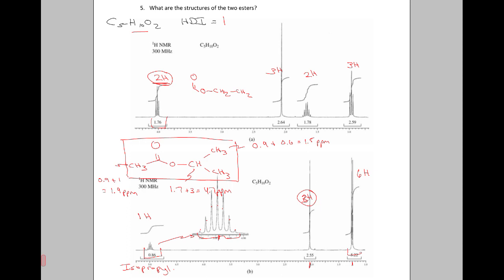We see a singlet here that integrates for three protons, and if we put our methyl group over here, the estimated chemical shift for that methyl group would be 1.9 ppm, just like it was in the last case, and that makes sense because the chemical shift is just over 2, just a little bit above it, so that seems pretty close.